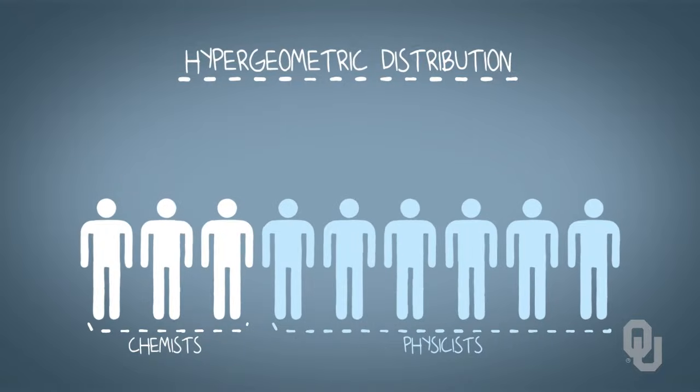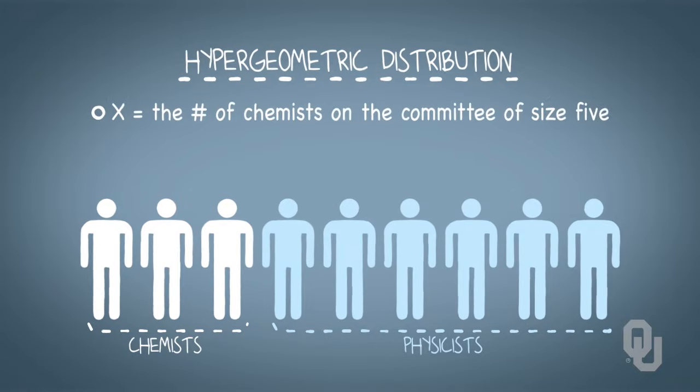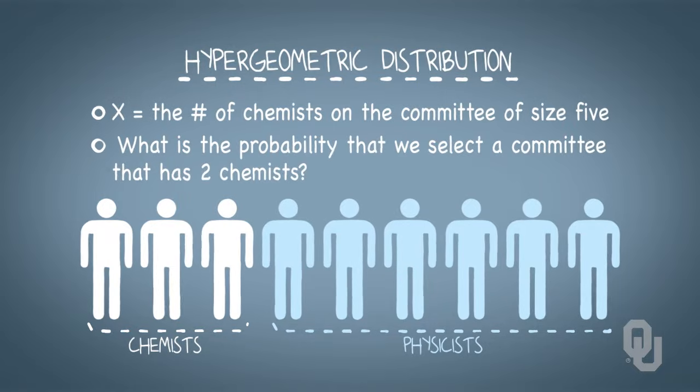Back to our committee of 5 selected at random from 3 chemists and 6 physicists. We define our random variable X as the number of chemists on the committee of size 5. What is the probability that we select a committee that has 2 chemists?